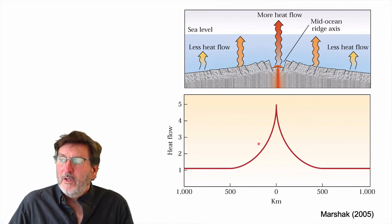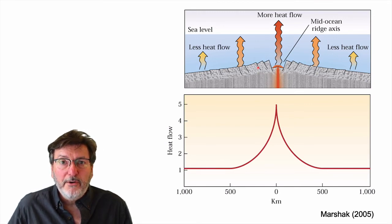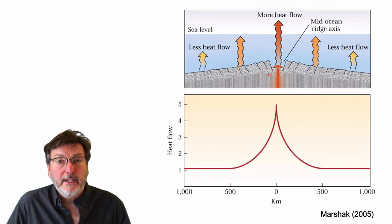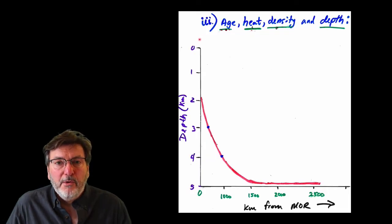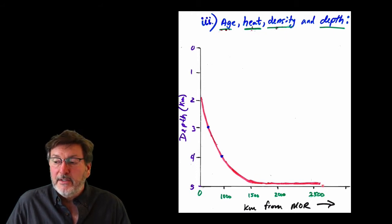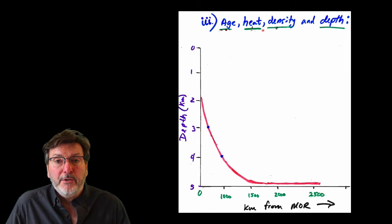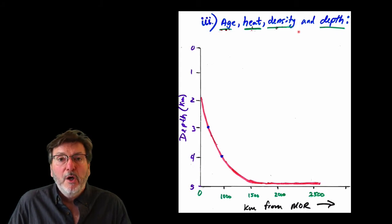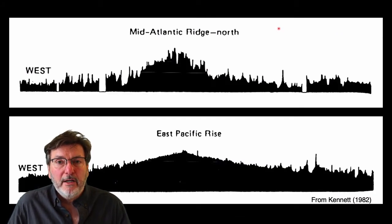So in an idealized world the heat flow looks like the theoretical curve, but the actual rocks are water-cooled, just like your car. These hydrothermal systems act like a radiator to cool the ocean crust, and that's where the missing heat is going — the heat is going into the water, not the rocks themselves. The cooling of the ocean crust as it moves away from the upwelling center causes it to cool and gain density, and the ocean actually gets deeper as it moves away from the mid-ocean ridge.